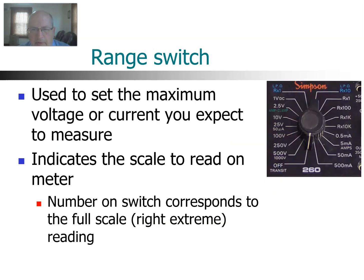The middle switch, perhaps the most important, is the range switch. That is used to set the maximum voltage or current that you expect to measure. It also corresponds to what scale you read. The number on the switch corresponds to the maximum deflection, or the full right-hand extreme of the meter in terms of the numbers you see on the meter reading, so you know which set of numbers to utilize.